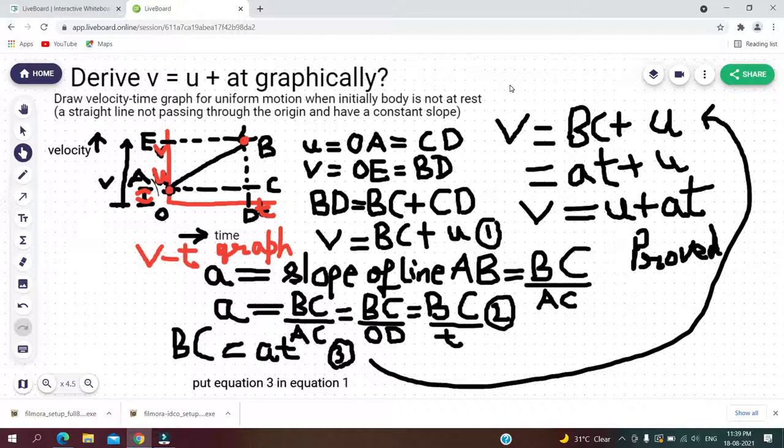We will see the graph appears to be a straight line which does not pass through the origin but which does have a constant slope, as we have assumed that acceleration is constant and the velocity changes uniformly.